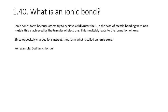What is an ionic bond? Ionic bonds form because atoms try to achieve full outer shells, which confers upon them extra stability. In the case of metals bonding with non-metals, this is achieved by the transfer of one or more electrons from a metal to a non-metal. This transfer of electrons inevitably leads to the formation of ions. Since oppositely charged ions attract, they therefore form an ionic bond.